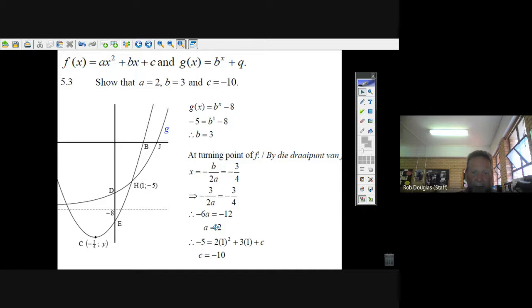And then you can take, now that we know that a is 2, we know b is 3, we can substitute (1, -5) back into the parabola equation. We know what a and b are now. Now we just solve for c. Well, we've got minus 5, we've got 2 times 1 and 3 times 1, that's 5. Subtract 5, solve, and you get c equals minus 10.